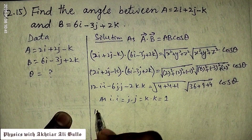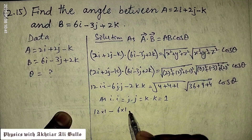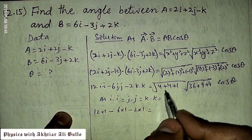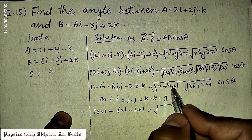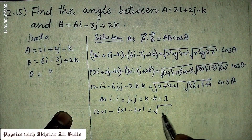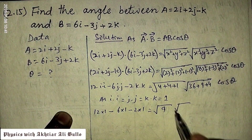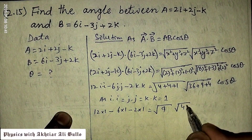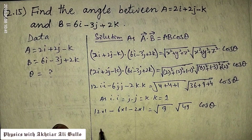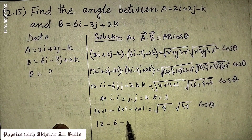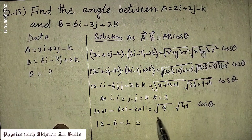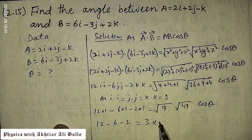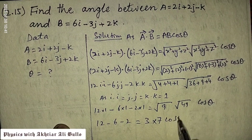So 12 times 1 minus 6 times 1 minus 2 times 1 equals the square root of (4 + 4 + 1) times the square root of (36 + 9 + 4) into cos theta. That gives us the square root of 9, which is 3, and the square root of 49, which is 7, into cos theta. So 12 minus 6 minus 2 equals 3 times 7 equals 21 into cos theta.